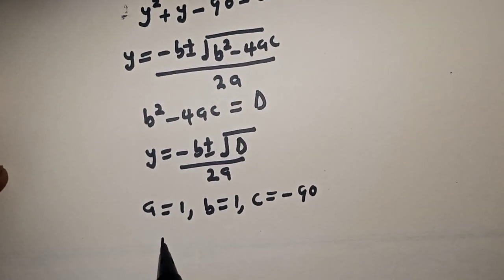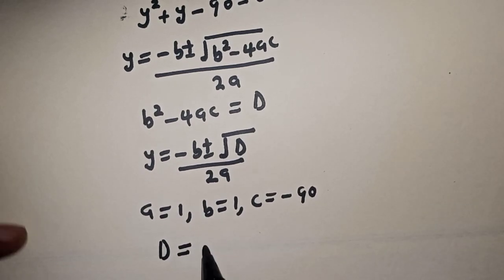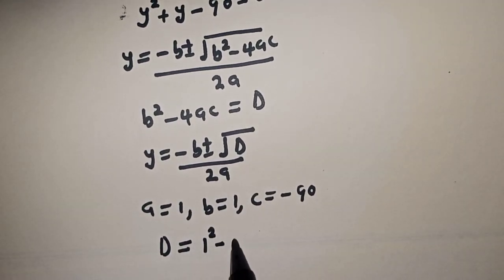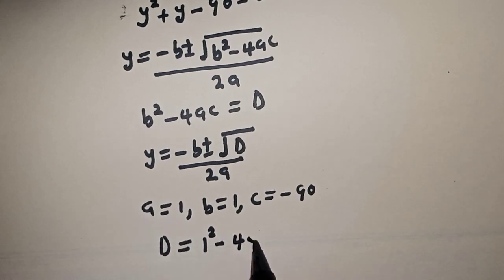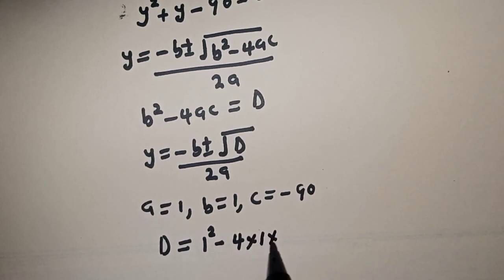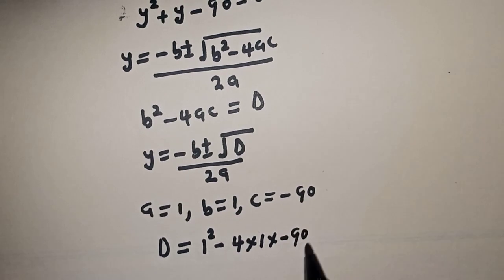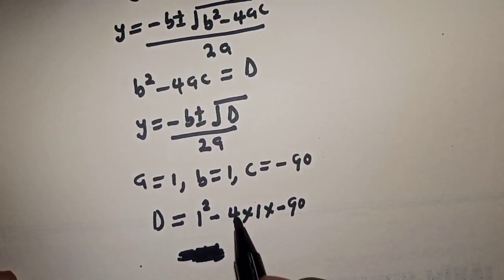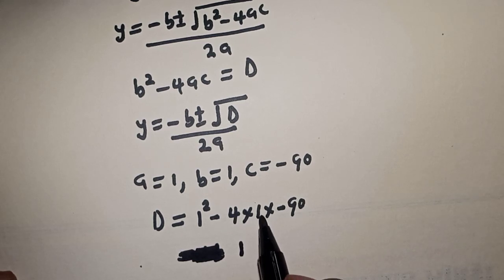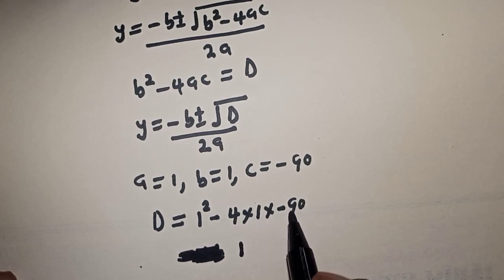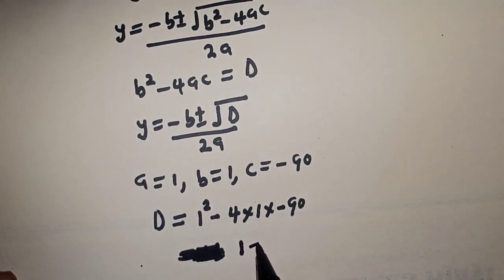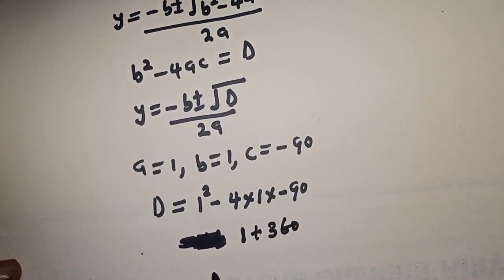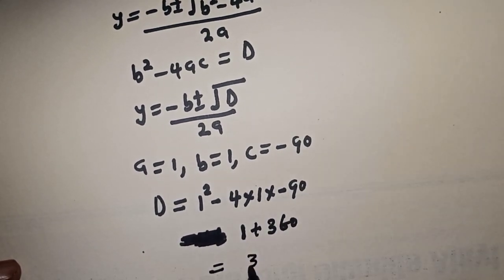Then the discriminant is equal to 1 squared minus 4 times 1 times minus 90. 1 squared is equal to 1, then minus 4 times 1 times minus 90 is plus 360. So the discriminant is equal to 361.